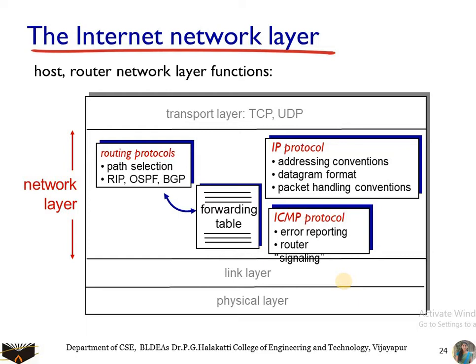This internet network layer has three main components. The first component is the IP protocol. The IP protocol contains addressing conventions, datagram format, and packet handling conventions.